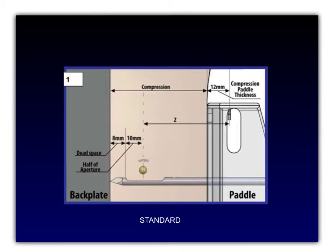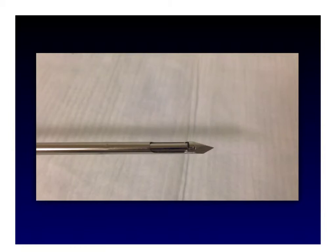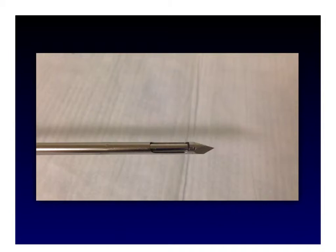The biopsy device is fired in the breast. The distance the device travels is called the stroke. Once in the post-fire position, tissue gets sucked down into the well and a cutting portion cuts over the tissue. To perform the biopsy, you fire it, then press and hold your foot on the pedal — that activates the vacuum, then the cutter, and a beep indicates you can adjust the biopsy device. To stop sampling, you take your foot off the pedal.